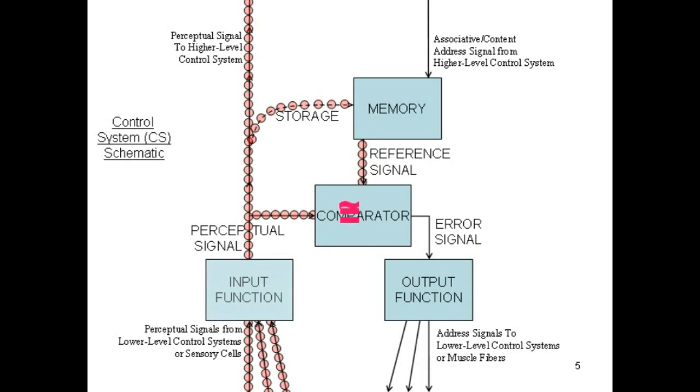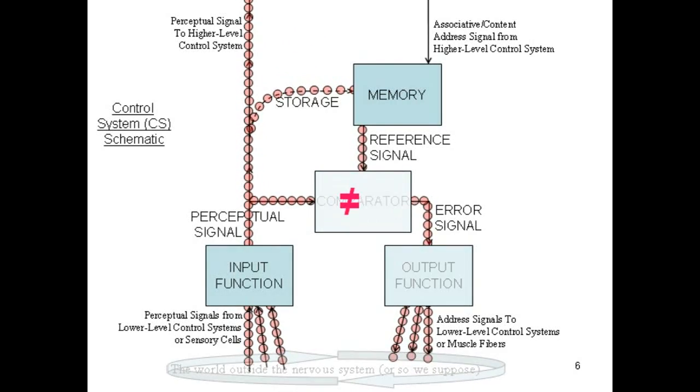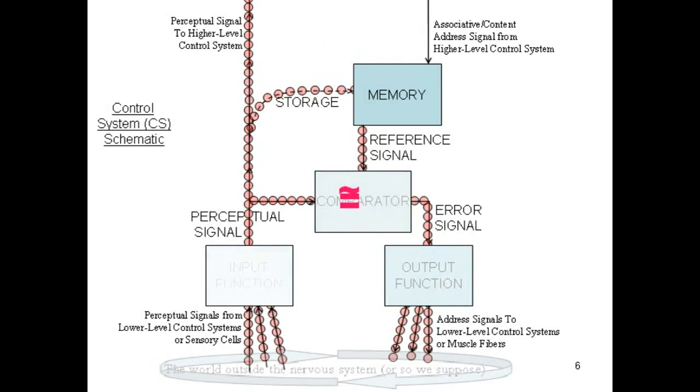But if the perceptual signal does not sufficiently approximate the reference signal, the comparator sends an error signal to the output function, which in turn generates address signals to lower-level CSs or directly to muscles. The organism acts, and thus perhaps changes how their surroundings appear to its CSs, in particular to the CS we are talking about. This negative feedback process is repeated, at several times per second, until the comparator is satisfied that the signal from the input function adequately approximates the reference signal.